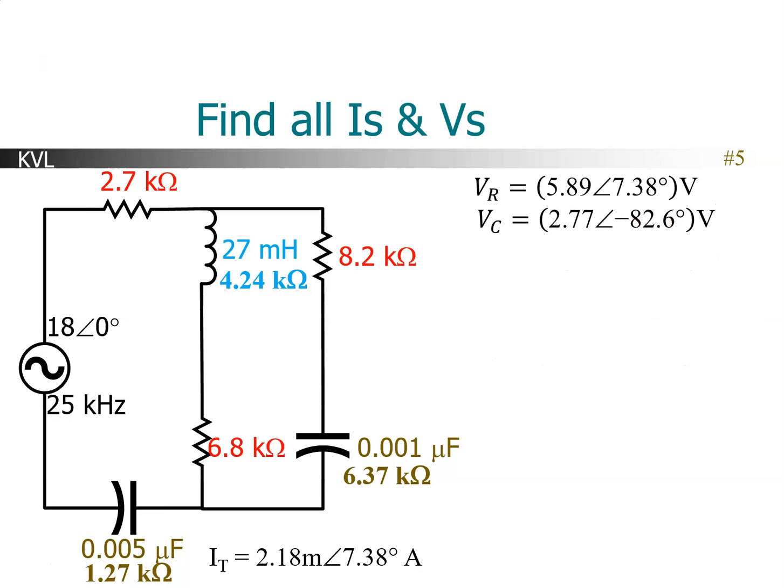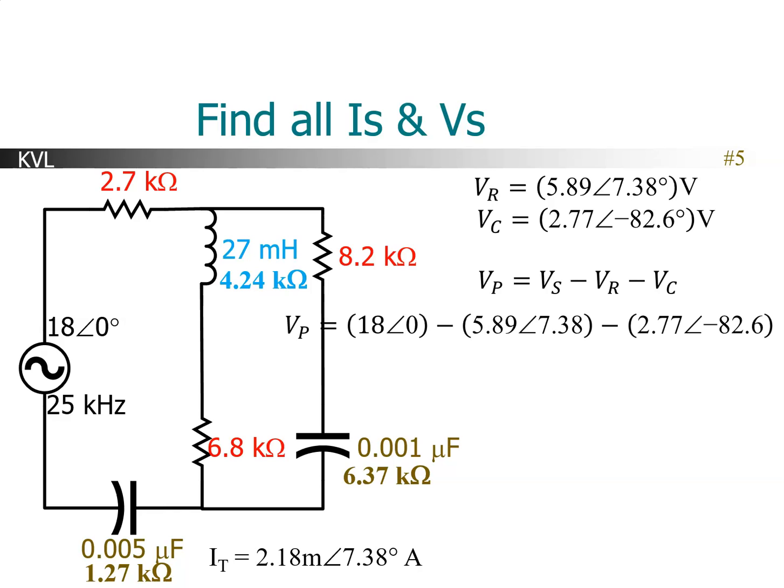Now what we can do is Kirchhoff's Voltage Law. We have the source voltage, the voltage across the top resistor, and the voltage across the bottom capacitor. If we add those up, we should be left with the voltage across the parallel branches. So the voltage across the parallel branches is the source voltage minus the resistor voltage minus the capacitor voltage — that's KVL going around the loop. Vp is the voltage across the two parallel branches, and filling in the numbers I get Vp = 12 ∠9.57 volts.